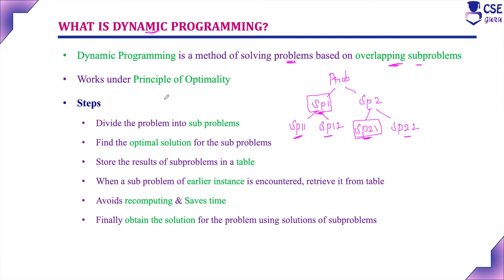Dynamic programming works under the concept of the principle of optimality. Optimality means always trying to find the optimal solution. Whenever we are finding the solution for subproblems, concentrate on finding the optimal solution. If we obtain the optimal solution for these subproblems, obviously we will get the optimal solution for the given problem. Dynamic programming works under the principle of optimality.